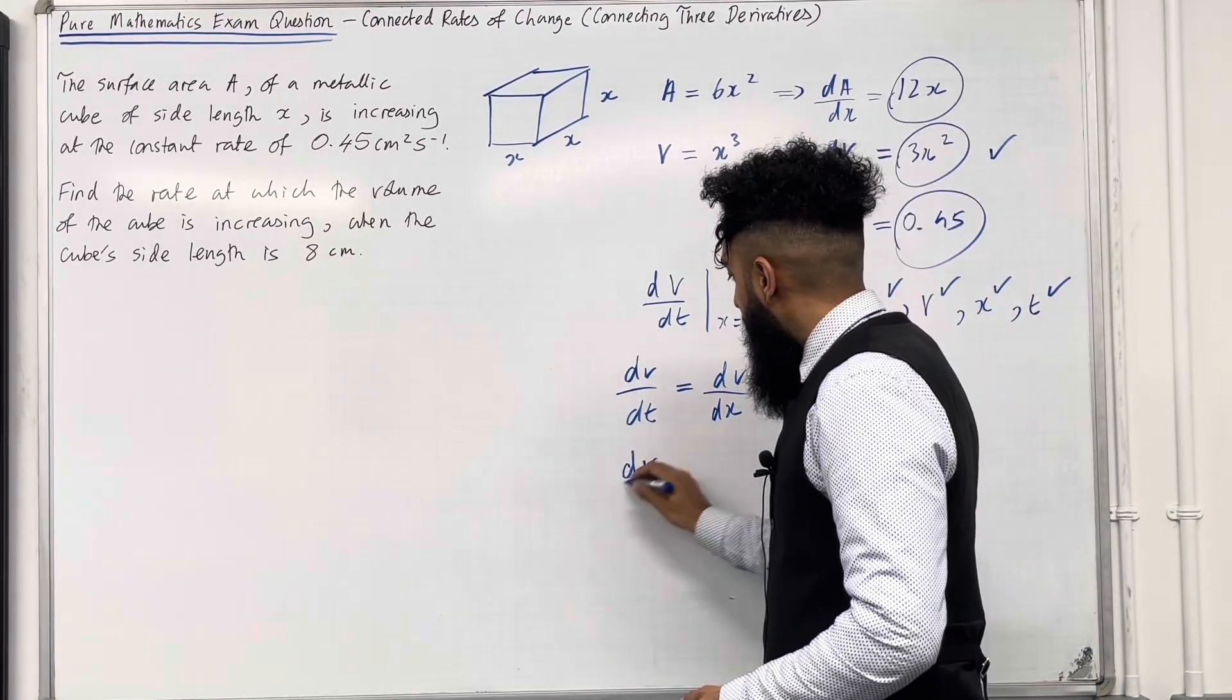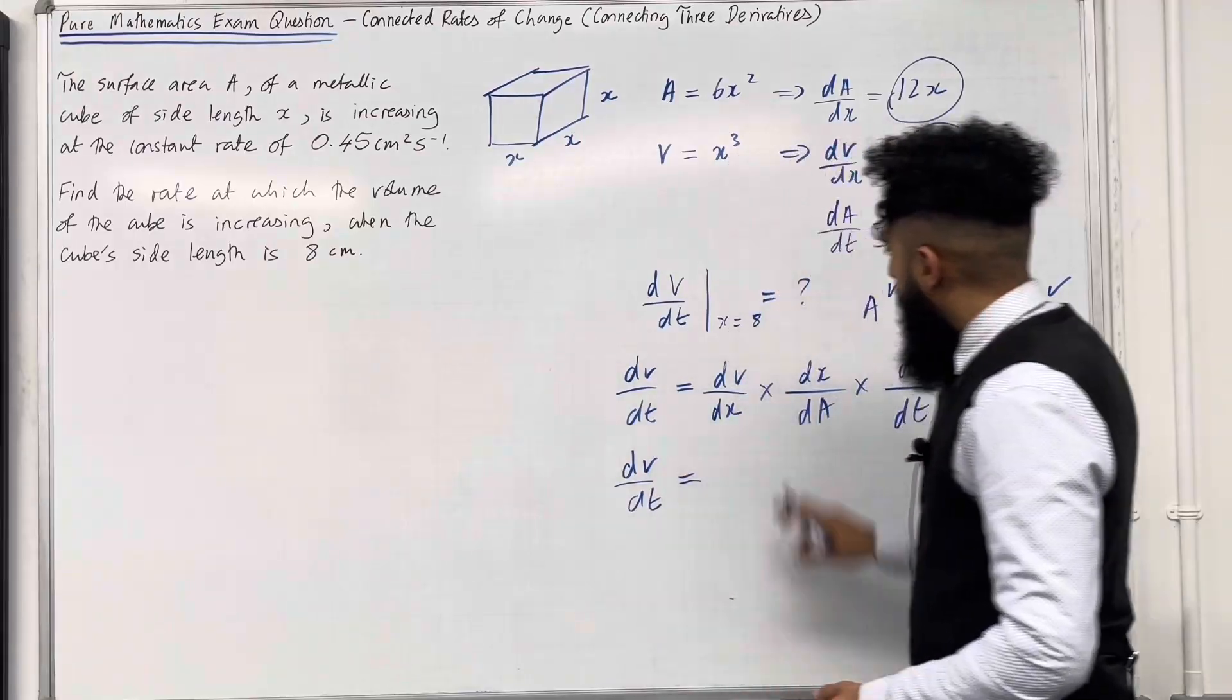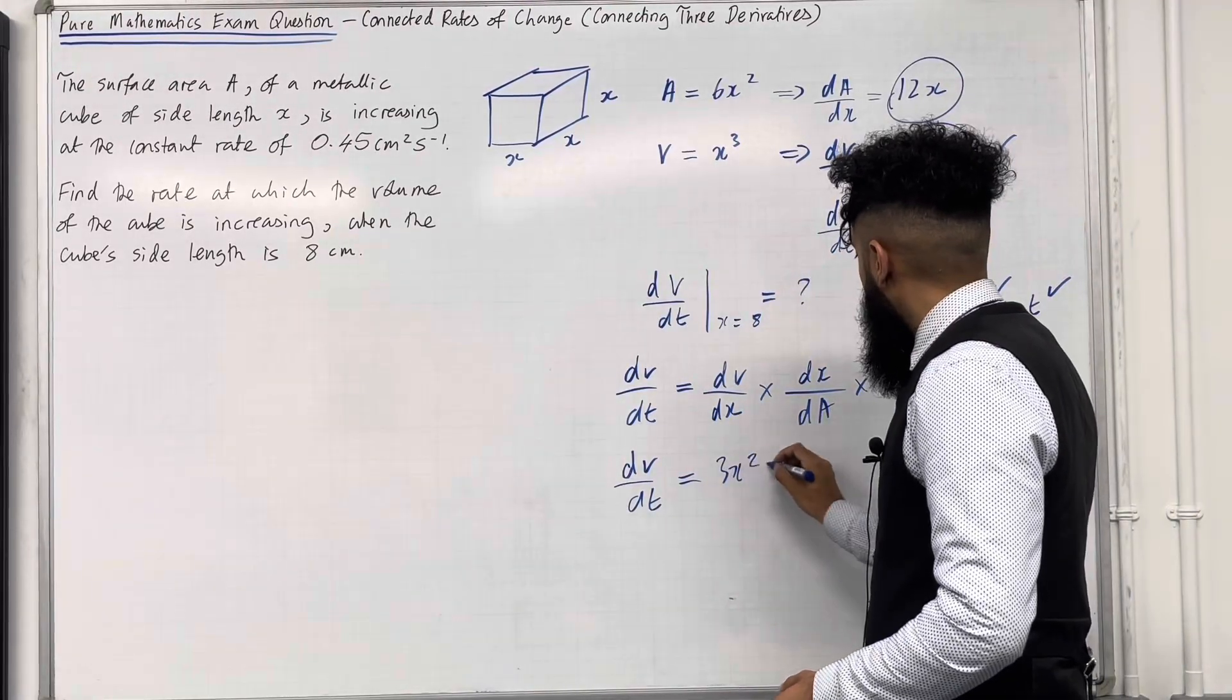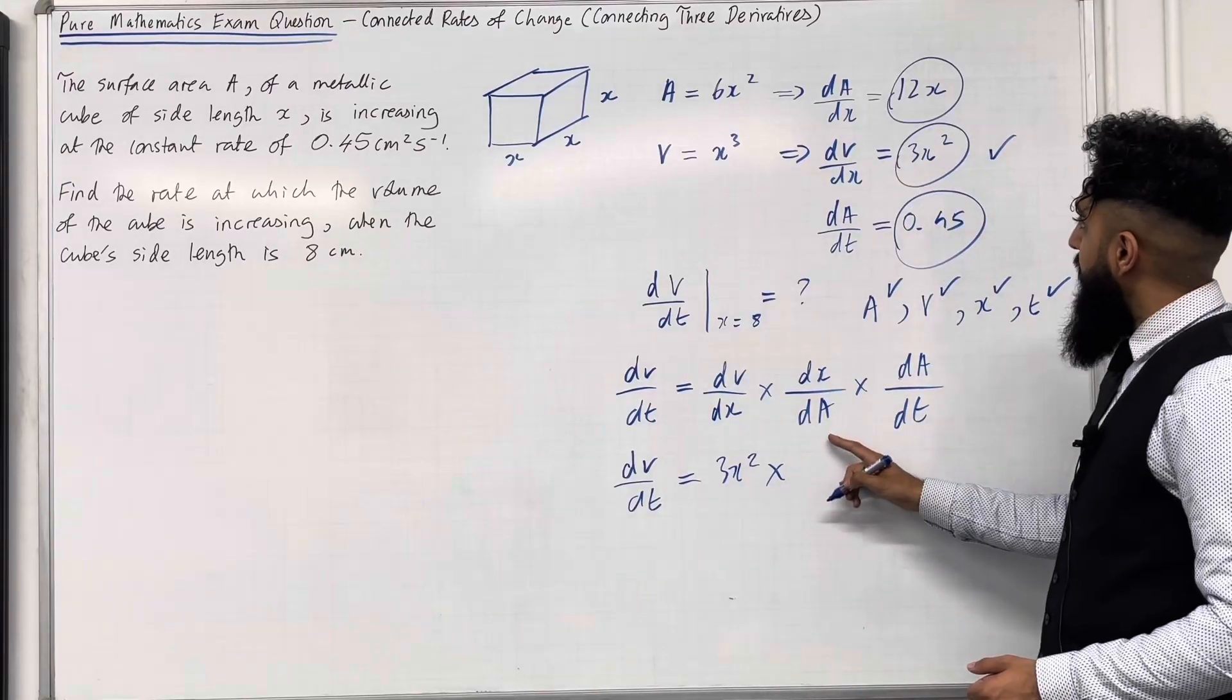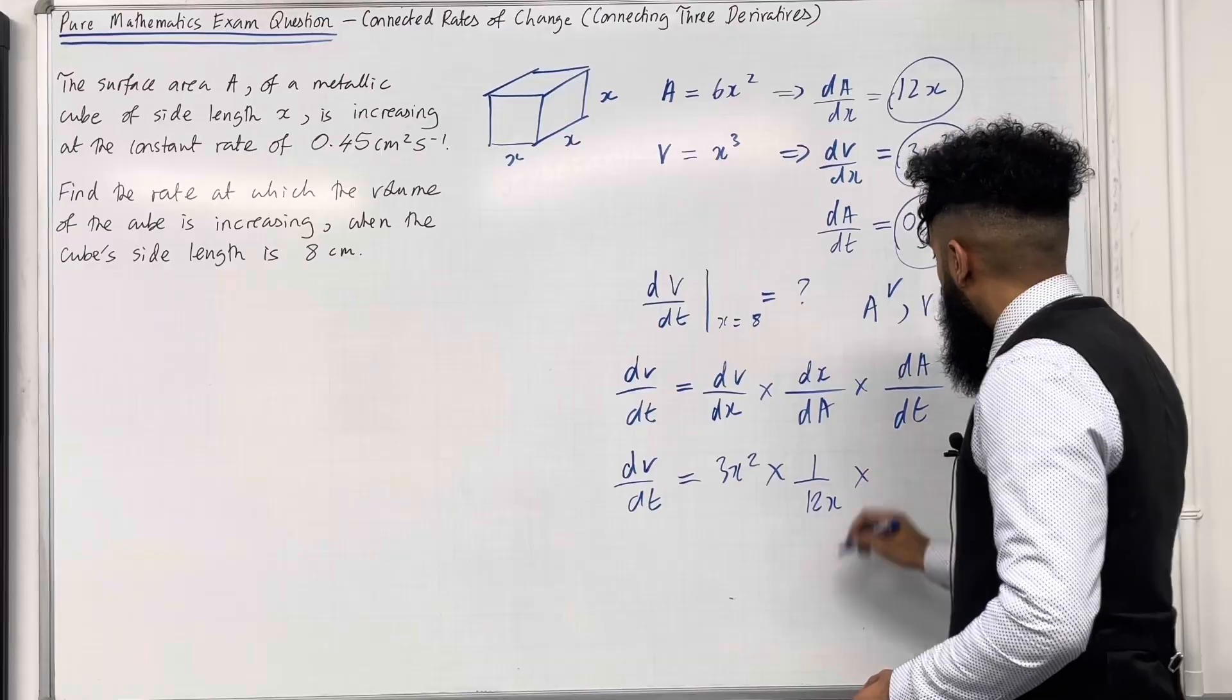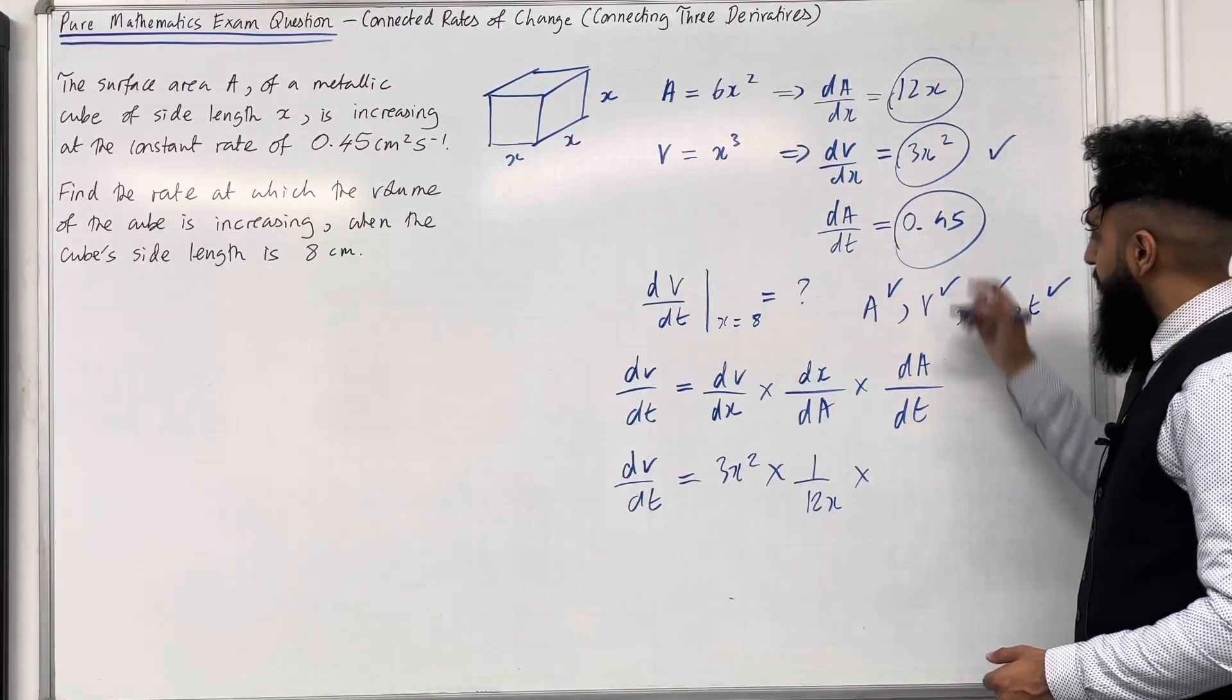Right, so now we've got dV over dt equal to dV over dx, which is 3X squared, multiplied by dx over dA. That would be the reciprocal of that. So 1 over 12X, multiplied by dA over dt, which is 0.45.